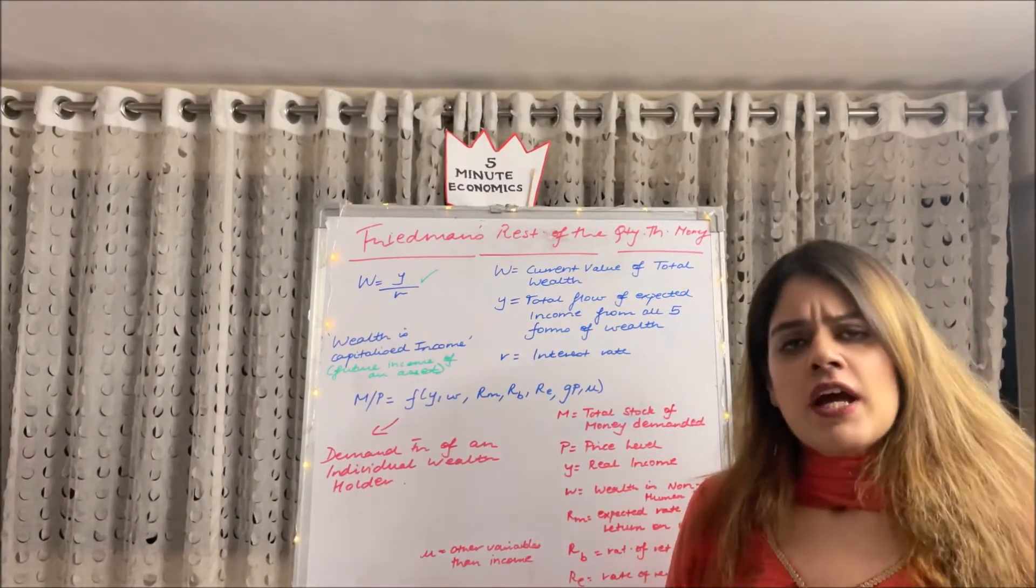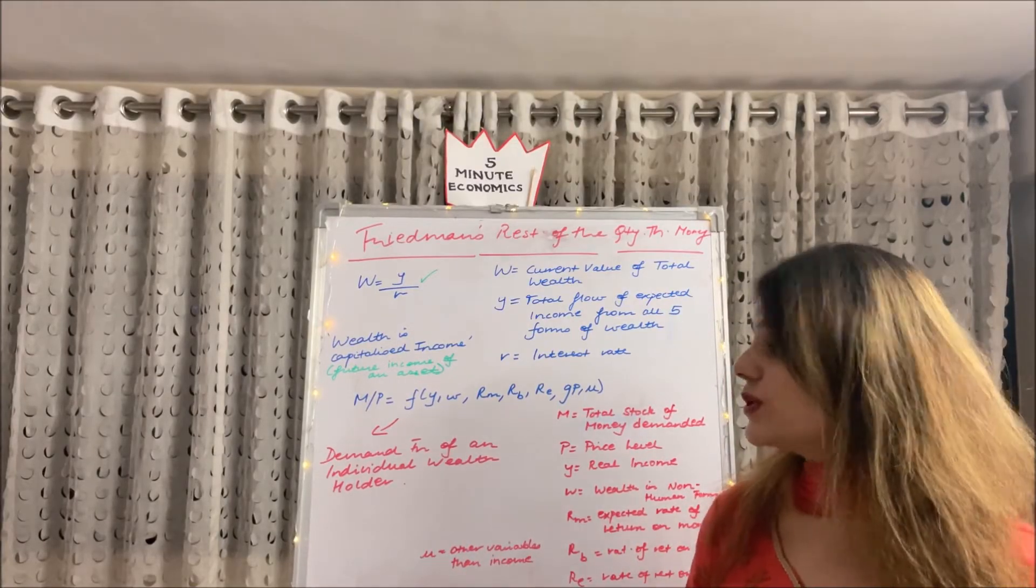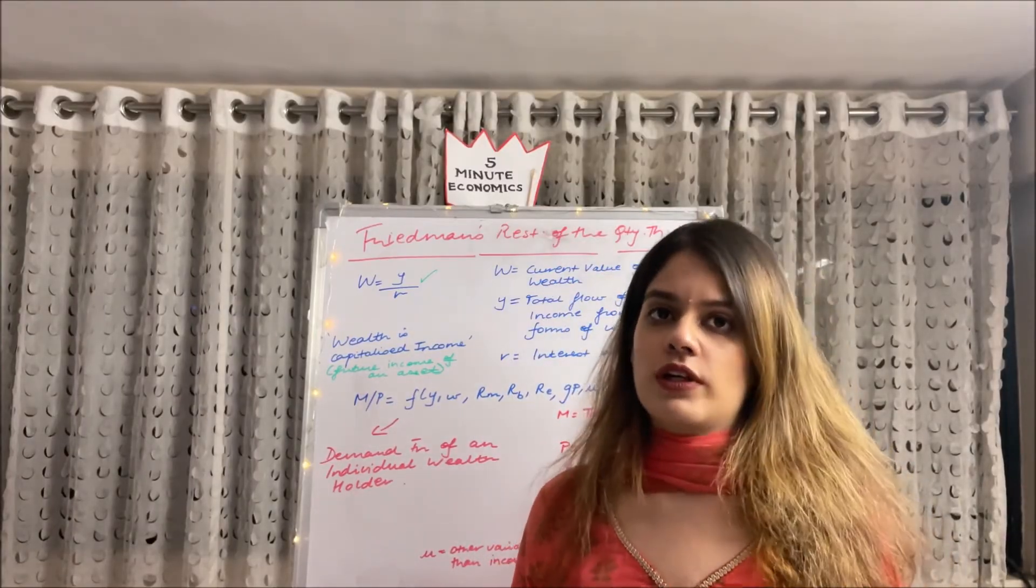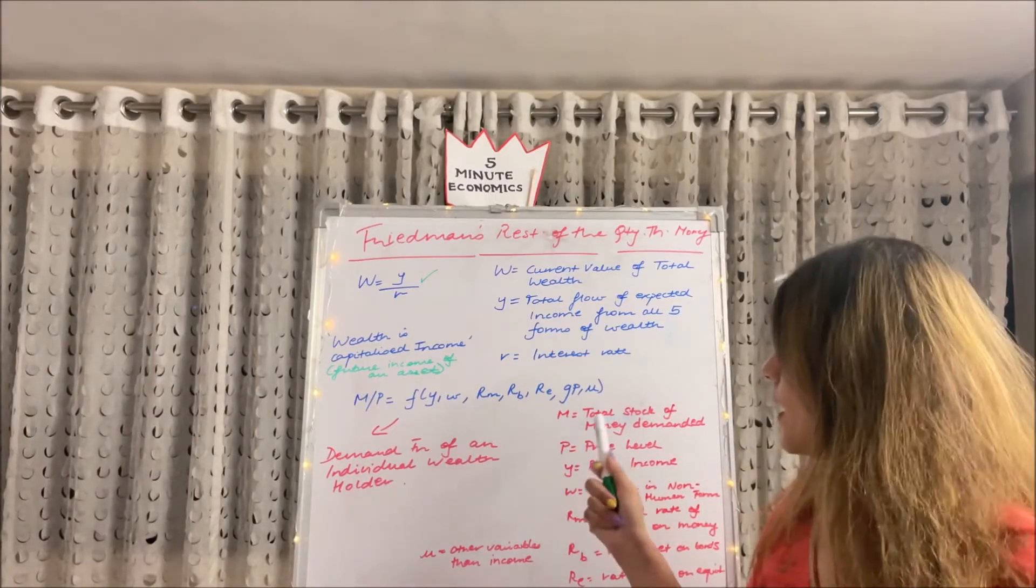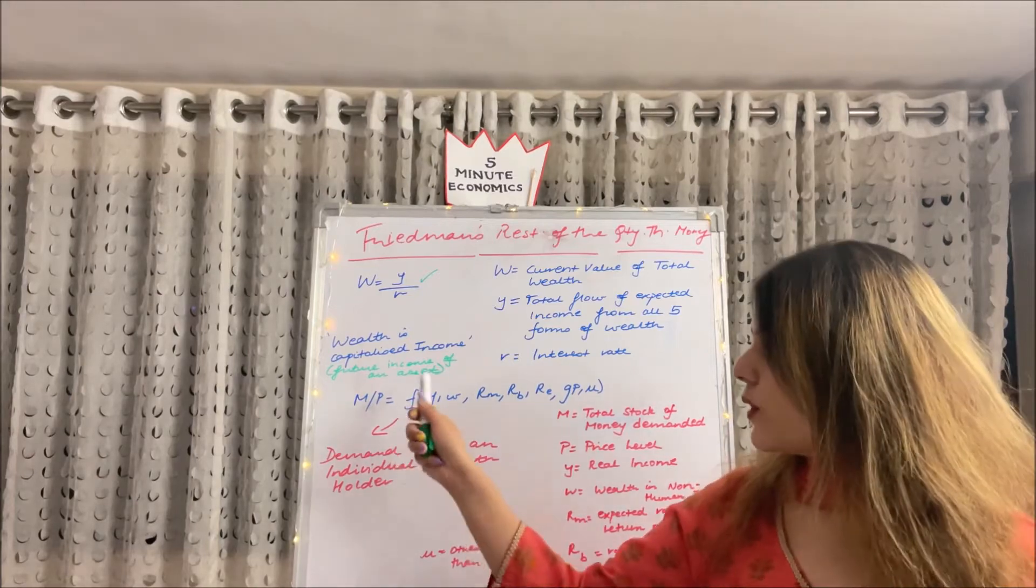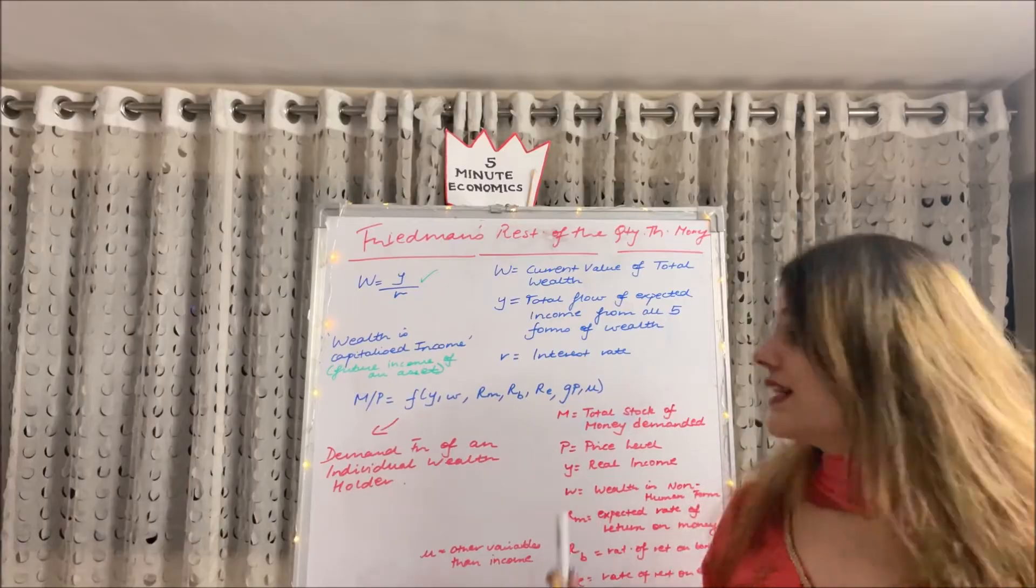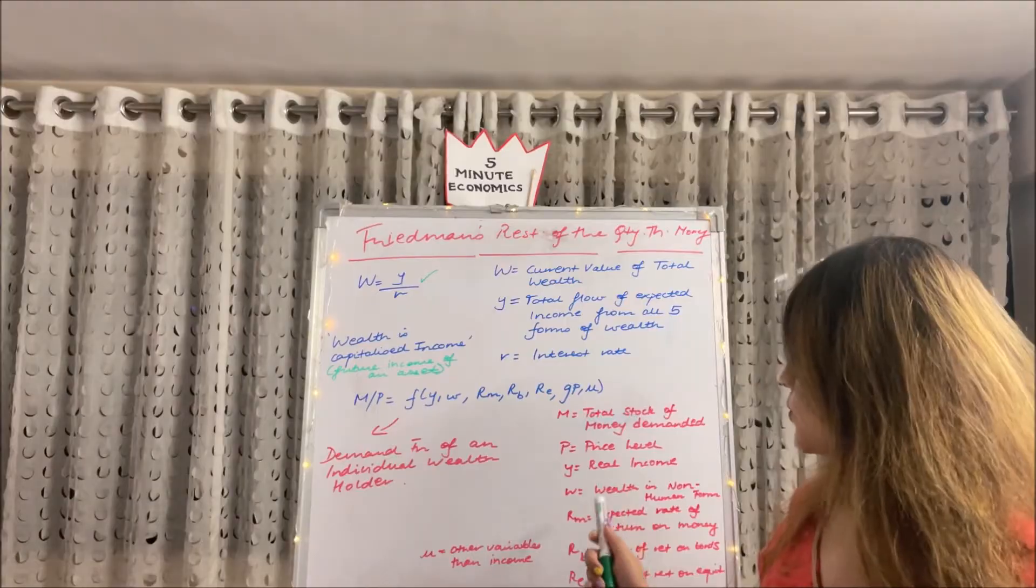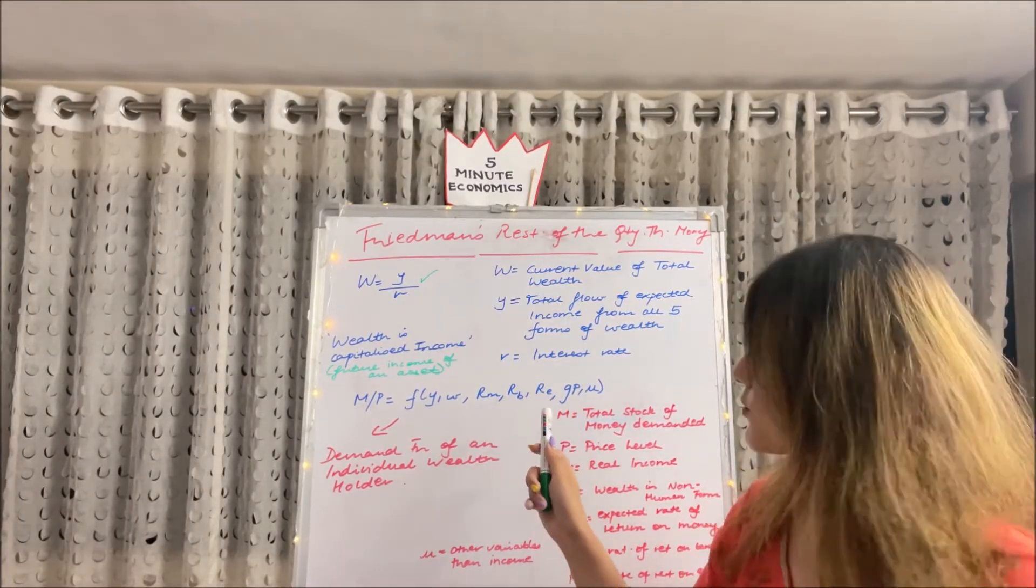This is what Friedman had said. He also then showed us what is the demand function of an individual wealth holder. So here we have this equation which you have to also remember. Where M stands for total stock of money demanded and P of course the price. M upon P is equal to what all does it depend upon? Number one, of course income, the real income, which is the inflation adjusted income. Secondly it depends upon W which is the wealth in non-human form. Next the three are very simple, which we just did, the forms of wealth.